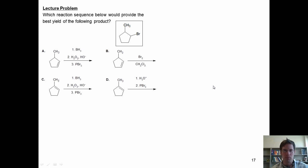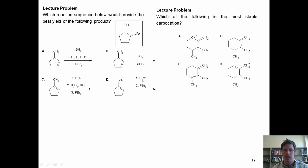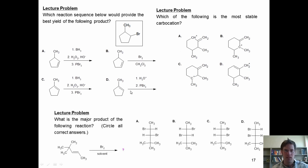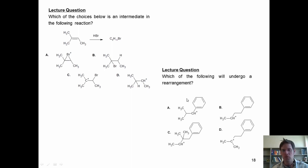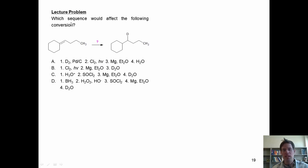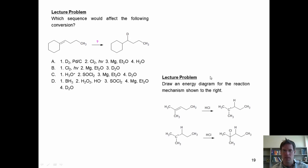Now let's do some problems. Which reaction sequence below would provide the best yield of the following product? Which of the following is the most stable carbocation? What is the major product of the following reaction? Which of the choices below is an intermediate in the following reaction? Which of the following will undergo a rearrangement? Which sequence would affect the following conversion — and remember D is deuterium, which is reactivity-wise essentially just like hydrogen. And draw an energy diagram for the reaction mechanism shown below.